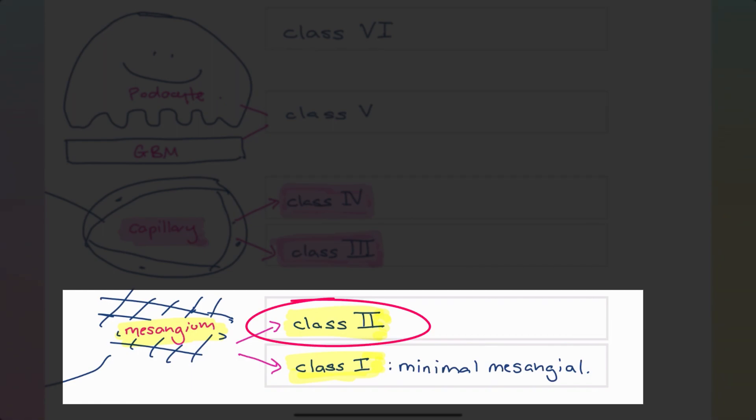Class two lupus nephritis, the biopsy does not look normal. Instead, we have mesangial cells that are inflamed and therefore proliferating. There is mesangial hypercellularity. And again, when staining is applied, we'll see those immune deposits in the mesangium. So the other term for class two lupus nephritis is mesangial proliferative lupus nephritis.